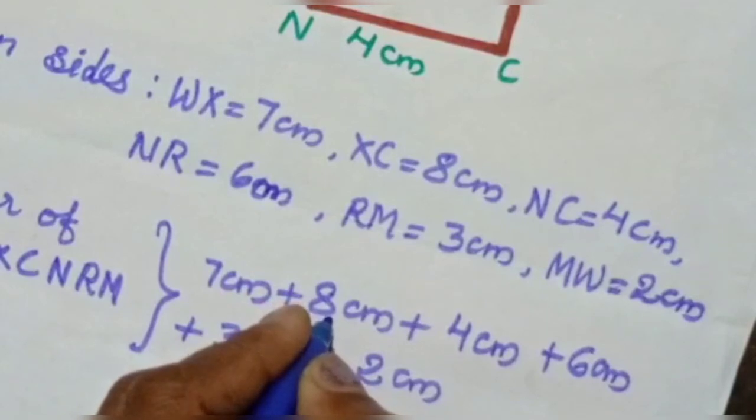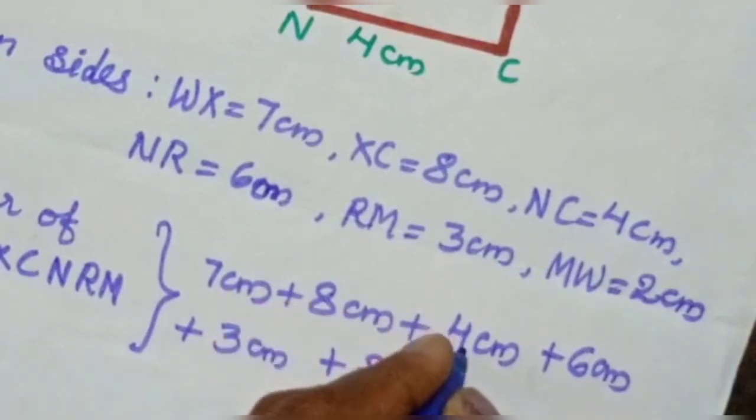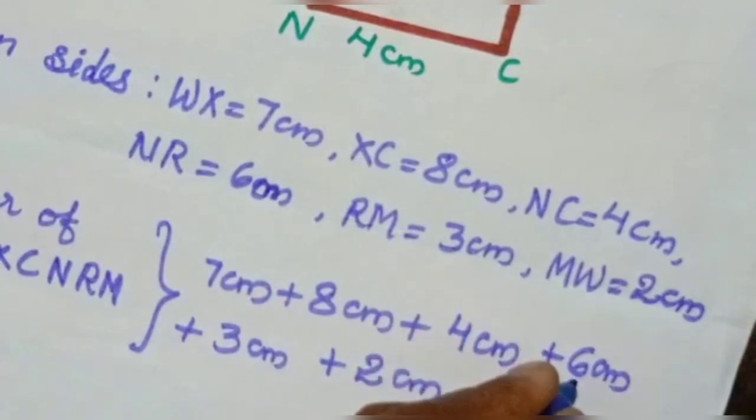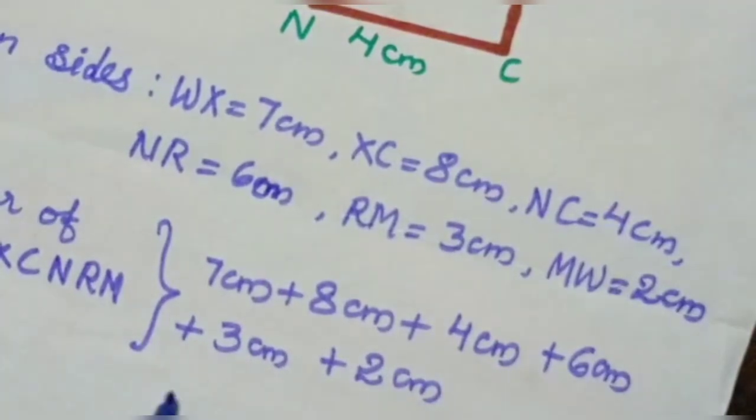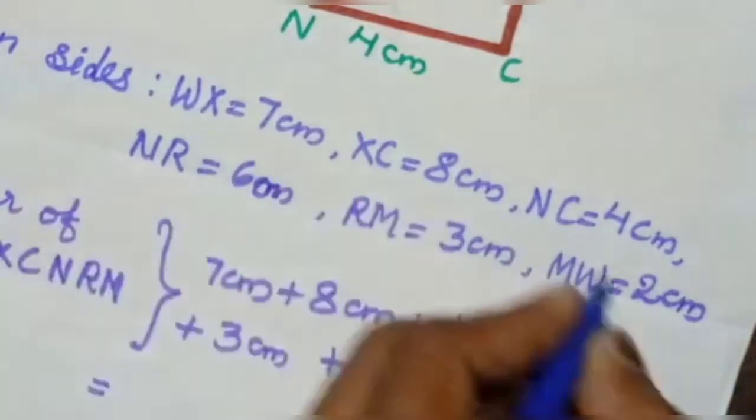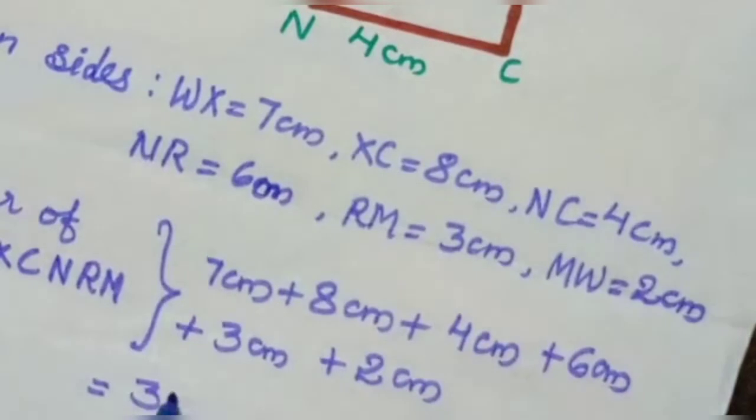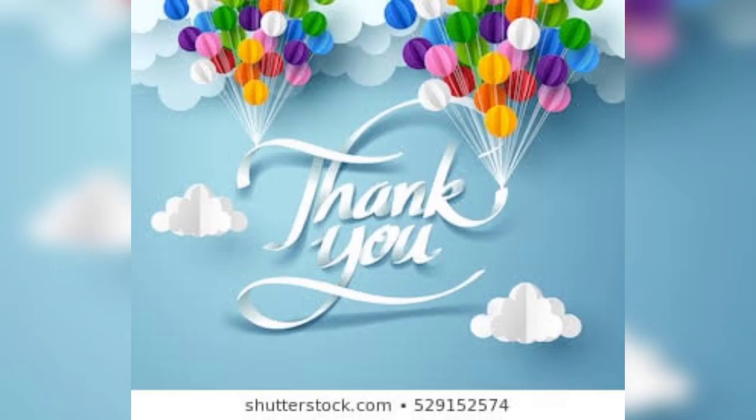7 plus 8 equals 15 cm. 15 plus 4, 19 cm. 19 plus 6, 25 cm. 25 plus 3, 28 cm. 28 plus 2, 30 cm. Total perimeter of the figure is 30 cm. Okay? Thank you.